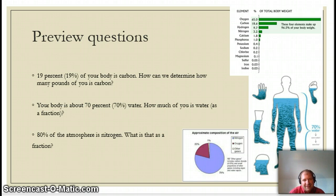So let's say you wanted to find out how many pounds of you are carbon. Well, if you weigh 100 pounds, that's pretty easy: 19. If you don't, it's going to take a little more math. Well, look at that. So your body is about 70% water as well. How can we write that as a fraction?